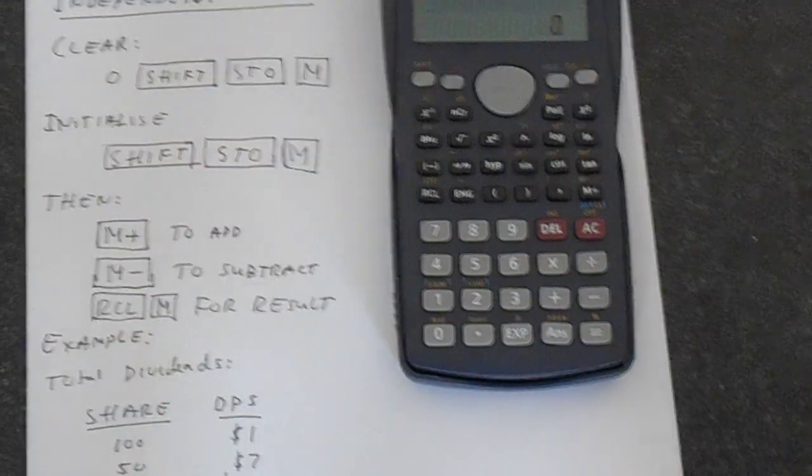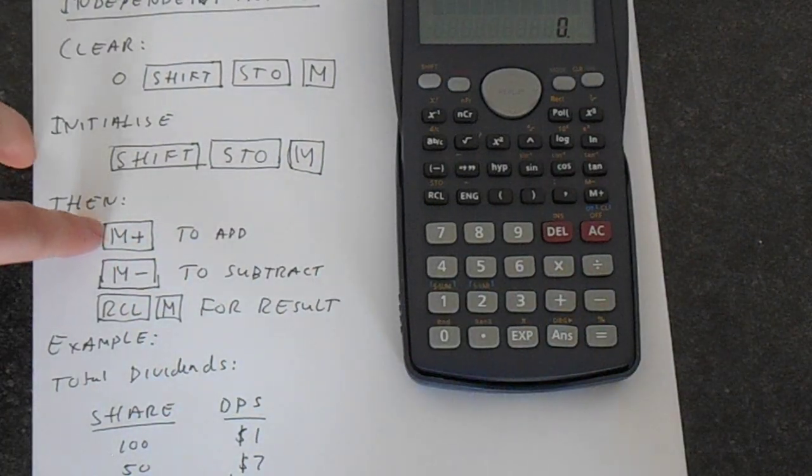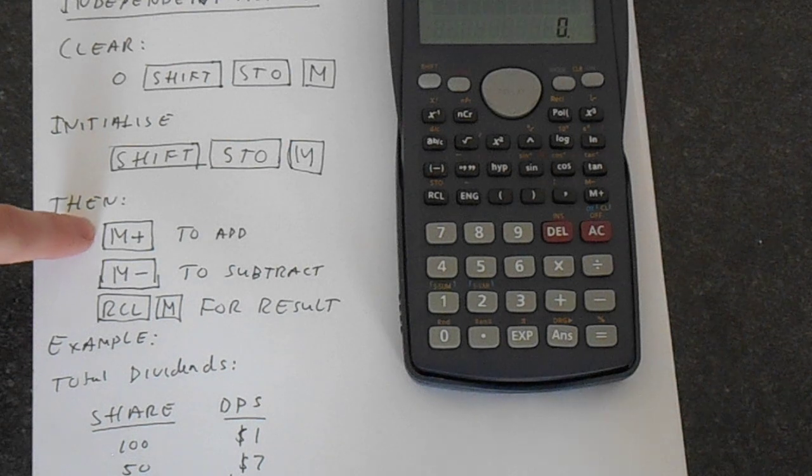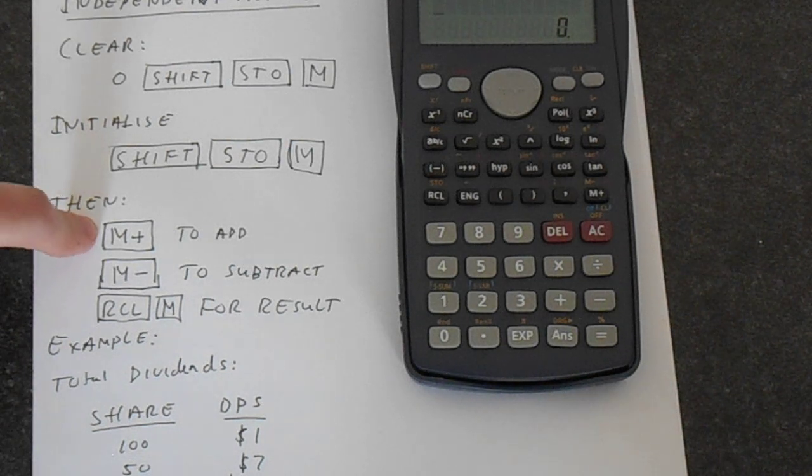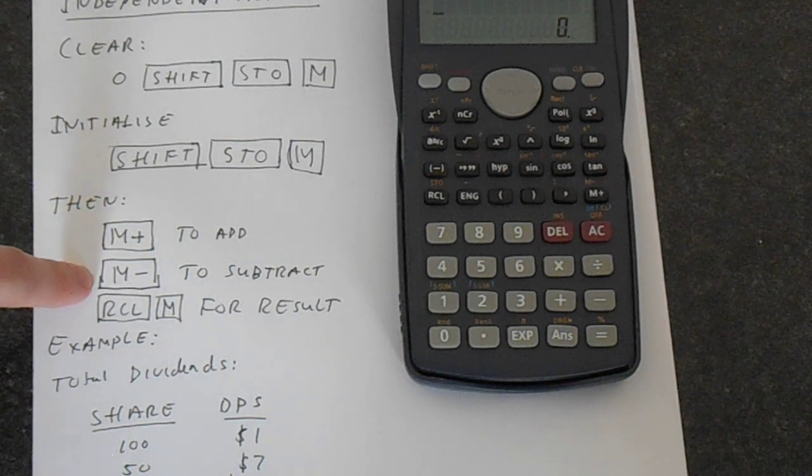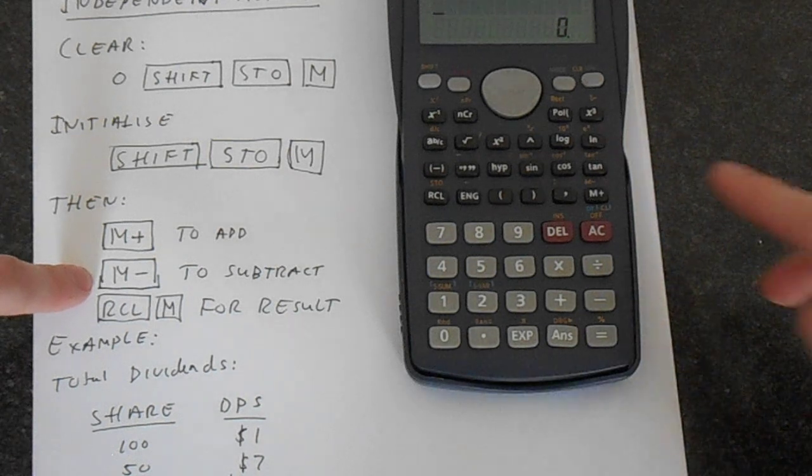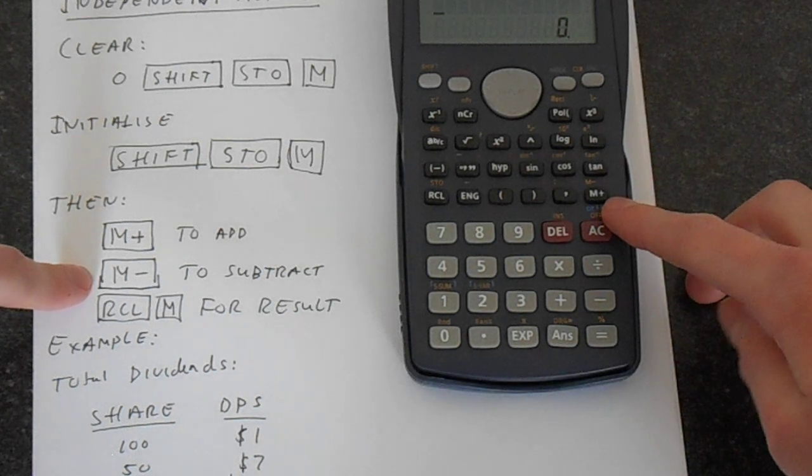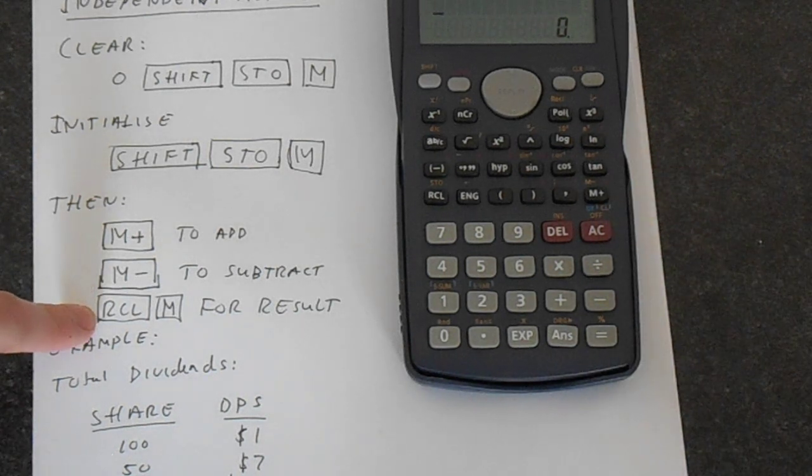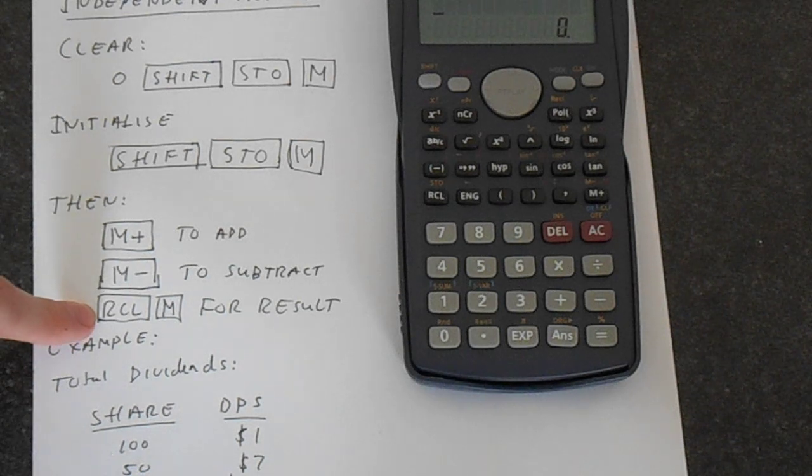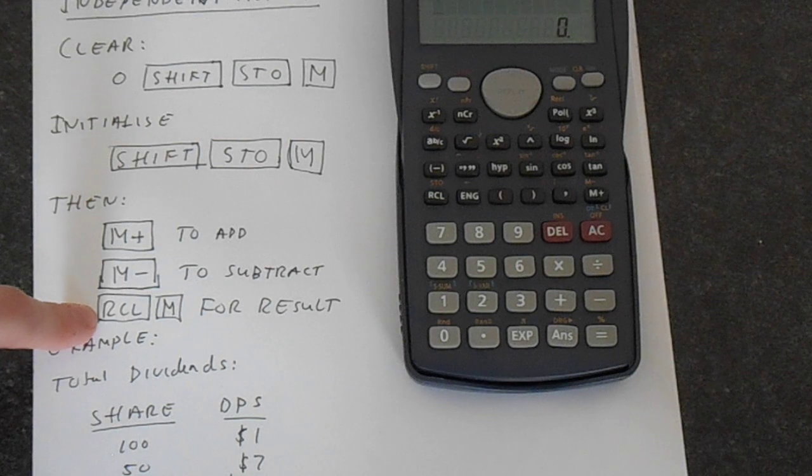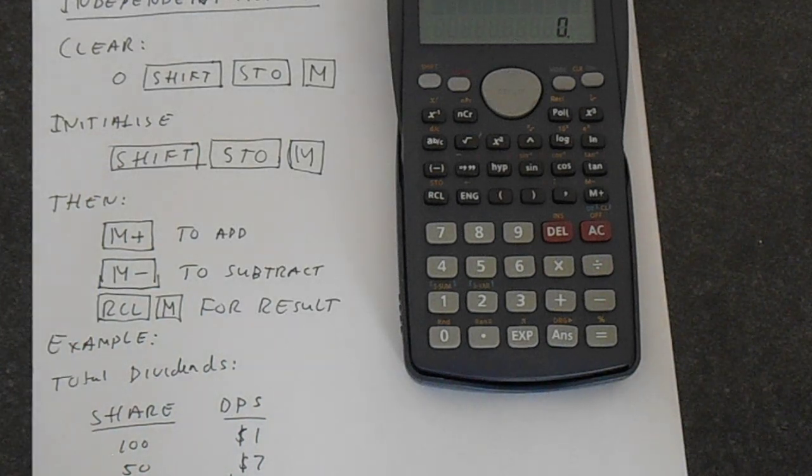Then the next steps are, if we want to add some value, say we've got 10 in memory, and we want to add 10 to it, we use M plus. If we want to subtract from it, we use M minus. M minus is on the same button, but you access that with Shift. Then to get our answer, we do recall M. That will tell us whatever value is currently saved in memory location M.